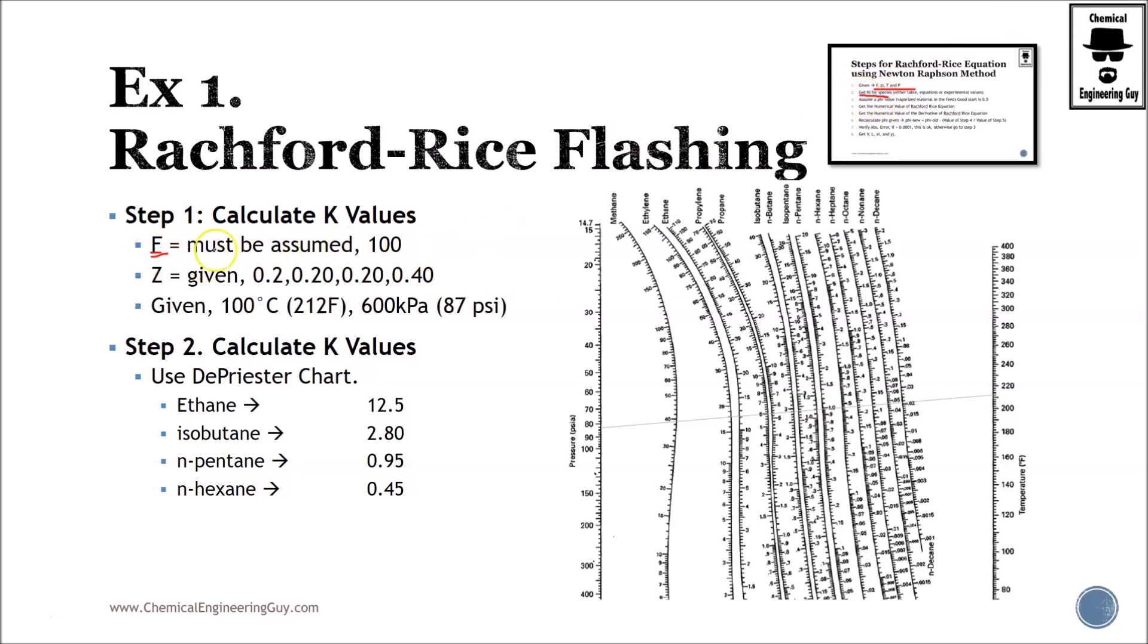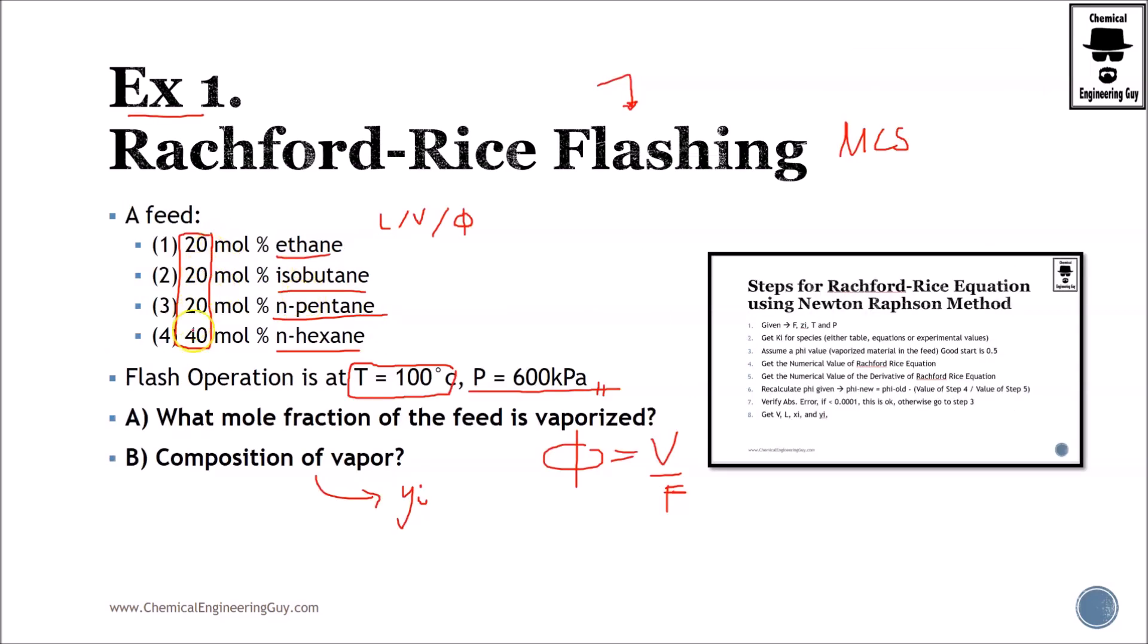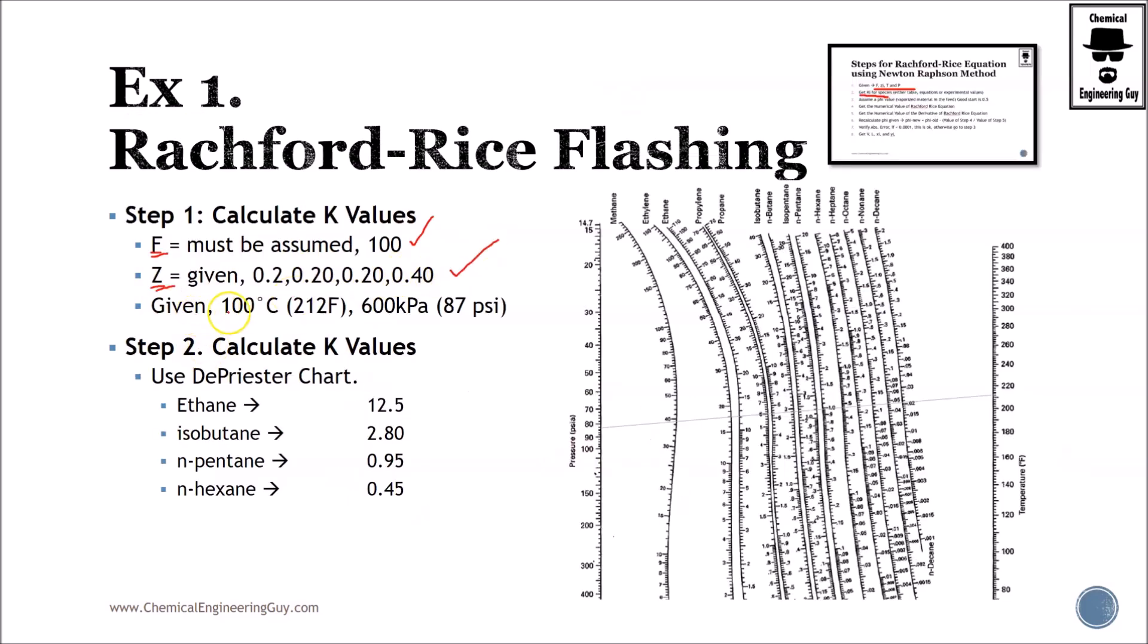So the data - we don't have total amount of F, so I'm going to be assuming 100 kilomole per hour. Z is given here, 20-20-20 and 40, and we have temperature and pressure. Now, we cannot use Raoult's law because this is high pressures, but fortunately, we have alkanes, so we can use the DePriester chart, and I'm going to do this for ethane, isobutane, n-pentane, and n-hexane.